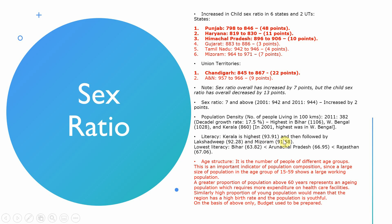Literacy rate depends on the population size in that region. If a region has 10 people and all can read and write, it is 100% literate. But in a large population like Bihar, not all people will be literate so the percentage falls. Mizoram and Lakshadweep have smaller populations so a greater proportion are literate — 92.28% and 91.5% respectively. Literate people are defined as those above age seven who can read and write in any language.